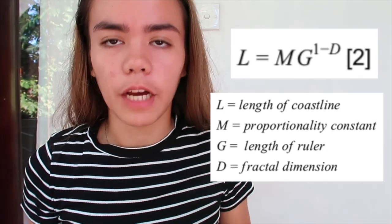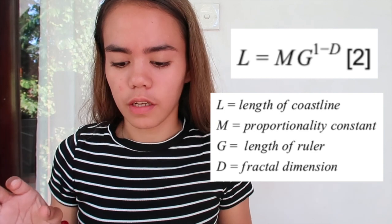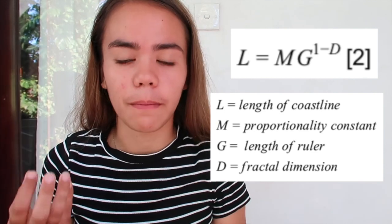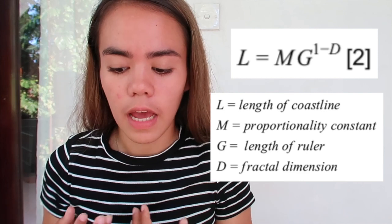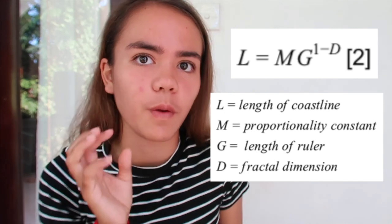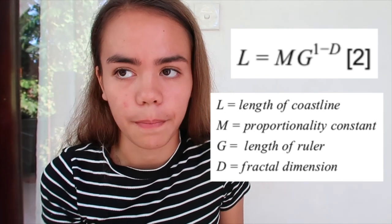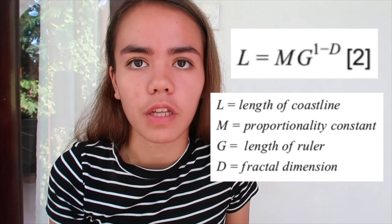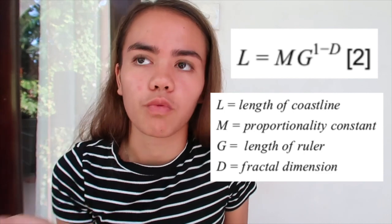What the equation is saying is that the length of the coastline is dependent on the length of the ruler to the power of 1 minus the fractal dimension. In his paper, Mandelbrot described how L largely depends on G. If you make G smaller, you're able to pick up finer details and thus L increases. So what this is telling us is that if we can measure the length of the coastline and the length of the ruler used to measure it, then we can just rearrange and solve for D.